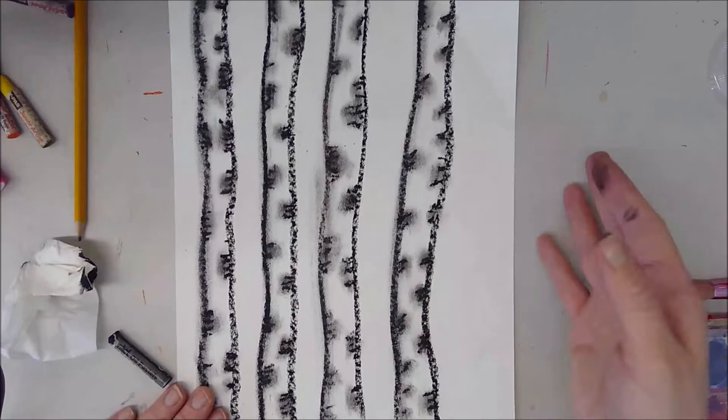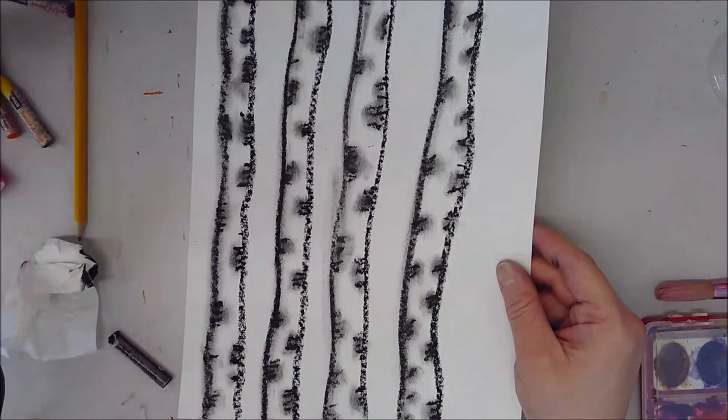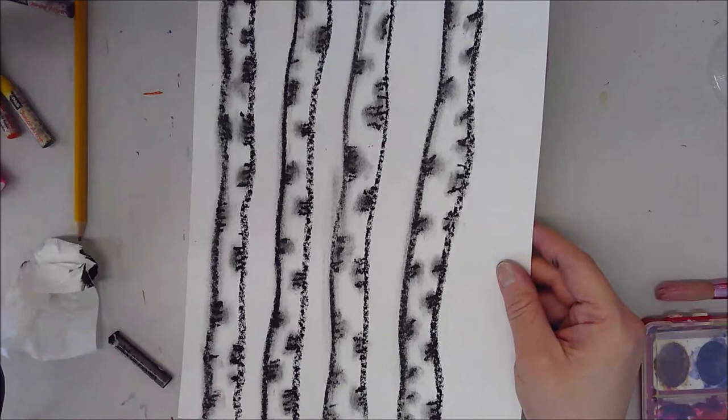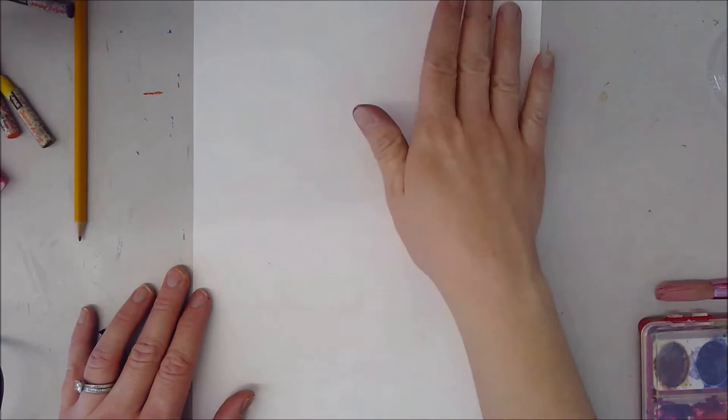Okay, done with our birch trees. We're going to set this aside and we're going to get started with our next part. For the next part of part one of this collage project, we want to create some really colorful, beautiful pattern paper that we can use to cut out the shapes of our birds later.